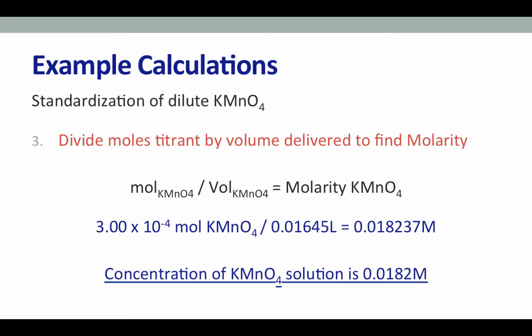You should take special care with significant figures when doing these calculations. The number of sig figs is limited by the known concentration of your titrant and by your volume measurements. The burettes you will be using have gradations down to 0.1 milliliter, and with a guess between the smallest gradations, you should be able to have two decimal places in all your volume measurements. You will be deducted points in your lab practical if you do not use the correct significant figures.